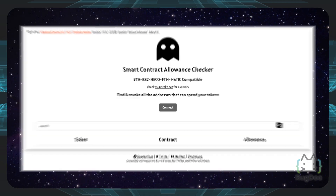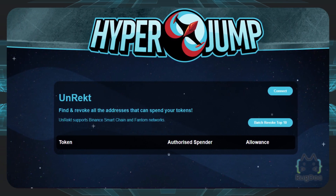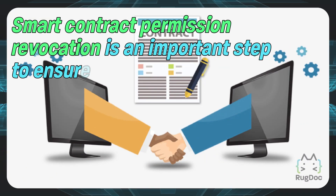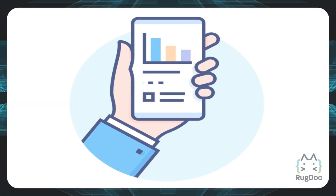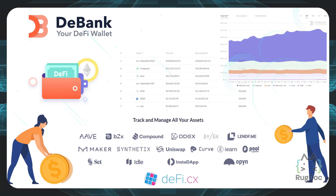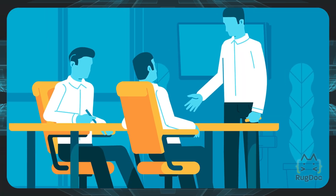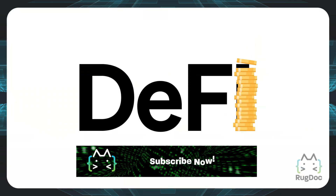There are plenty of other tools you can use such as Unrekt, bscscan.com, bfeefinance, or other websites — this is just one example. In conclusion, smart contract permission revocation is an important step to ensure the safety of your assets in your wallet. Using simple and user-friendly tools such as D-Bank, it will only take you a minute to revoke any permission. I definitely recommend revoking permissions if you feel a project is potentially scammy or could access your wallet funds without you asking. Stay safe in the DeFi space and have an amazing day!